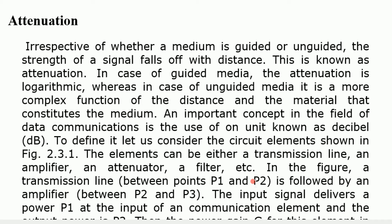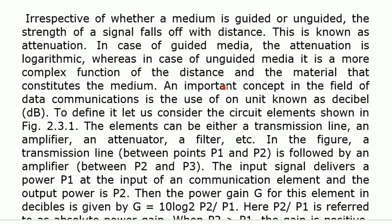Today we will see transmission impairments, starting with attenuation. Attenuation is one type of fall in signal strength. The medium may be guided or unguided. The strength of a signal falls off with distance, and that is called attenuation. Signal falls off with distance is called attenuation — this may also appear as a multiple choice question.